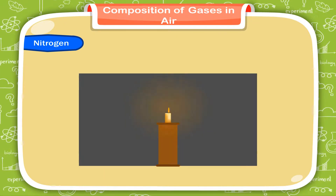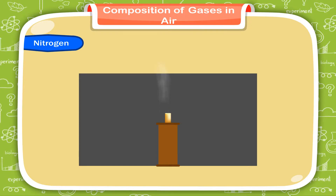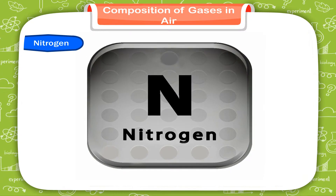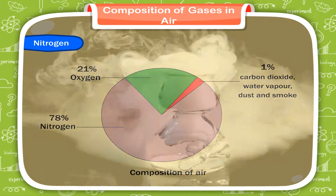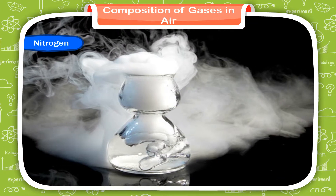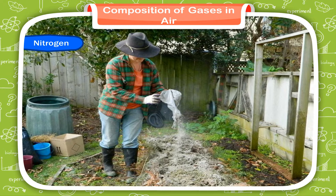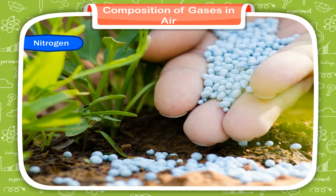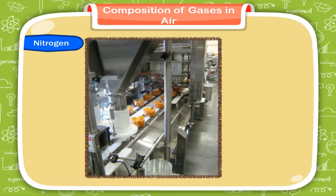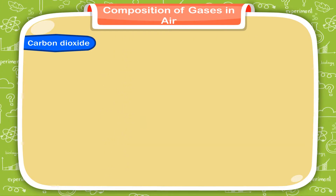Nitrogen. When we blow air on a candle, it is put off. This means that there is a component in air that does not support combustion. This component is Nitrogen. Nitrogen gas makes up 78% of air. This gas does not help in burning of a substance. Nitrogen is used to make fertilizers. These fertilizers are added to the soil which help in the growth of plants as they contain vital minerals. Nitrogen gas is also used in food packaging to keep the food fresh.